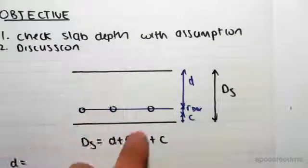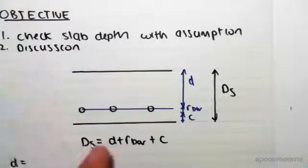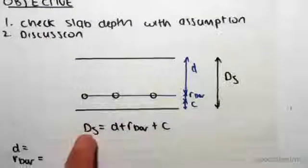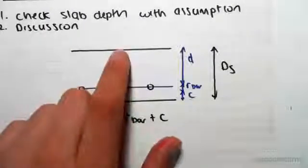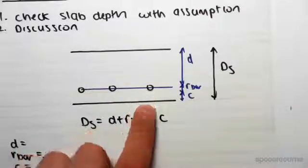So just to remind you of where we want to get to, we have this diagram here which is the total depth of the slab and that is equal to the depth little d from the top to the centroid of the bars plus the radius of the bar plus the cover.